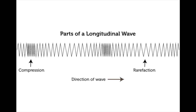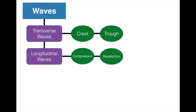Looking at the diagram, you can see the compression is the really tight part, and the really stretched-out parts are the rarefaction. The compressions and rarefactions go in the direction in which the energy is traveling. So let's add to our graphic organizer — longitudinal waves have compression, where they're squeezed together, and rarefaction, where they spread out.